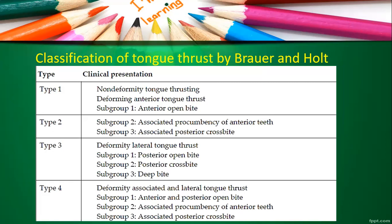Another classification is given by Breuer and Holt, who classified tongue thrust into four types. Type 1 is non-deforming tongue thrust. Type 2 is deforming anterior tongue thrust, where subgroup 1 includes anterior open bite, subgroup 2 is associated with procumbency of anterior teeth, and subgroup 3 is associated with posterior crossbite. Type 3 is deforming lateral tongue thrust.